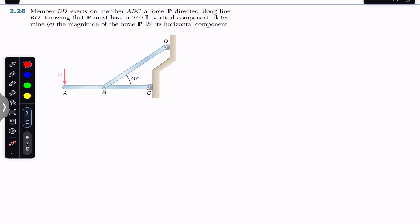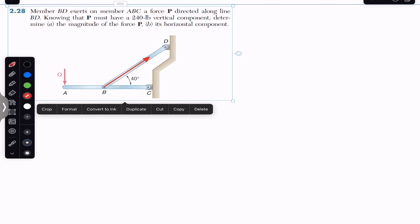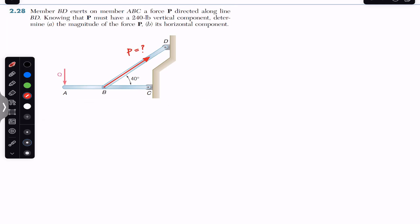Let us show that force P here. This is force P acting along this BD line, and its magnitude is required. We are given the magnitude of the vertical component, so the vertical component of this force P must be acting in the upward direction. Let us say this is P vertical, with magnitude 240 pounds. The magnitude of the horizontal component is also required.